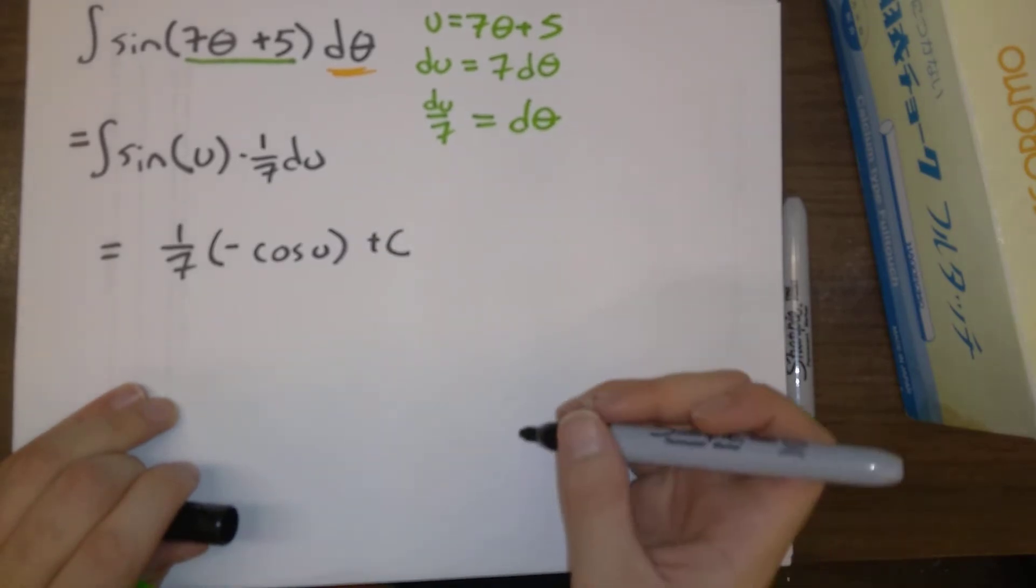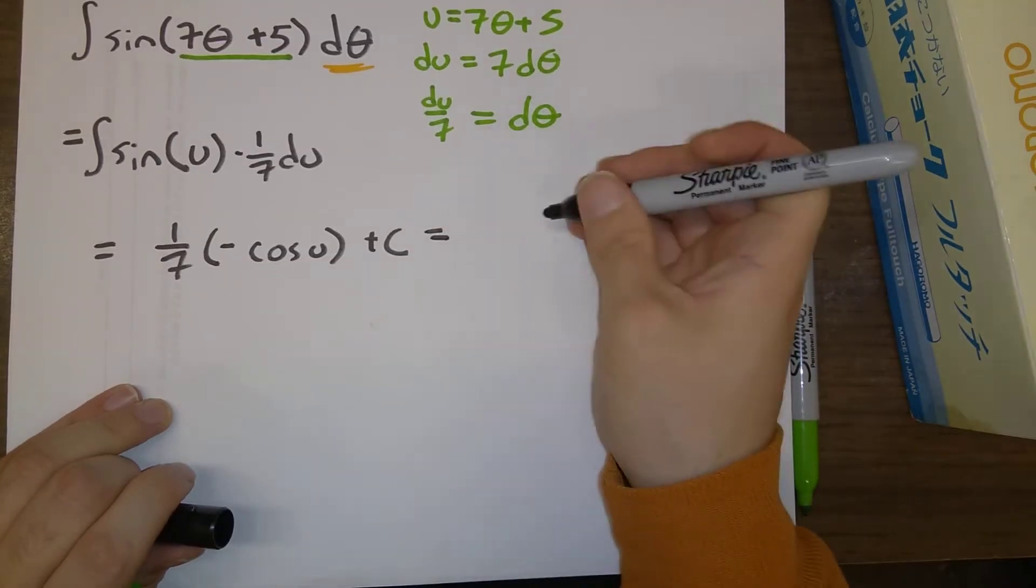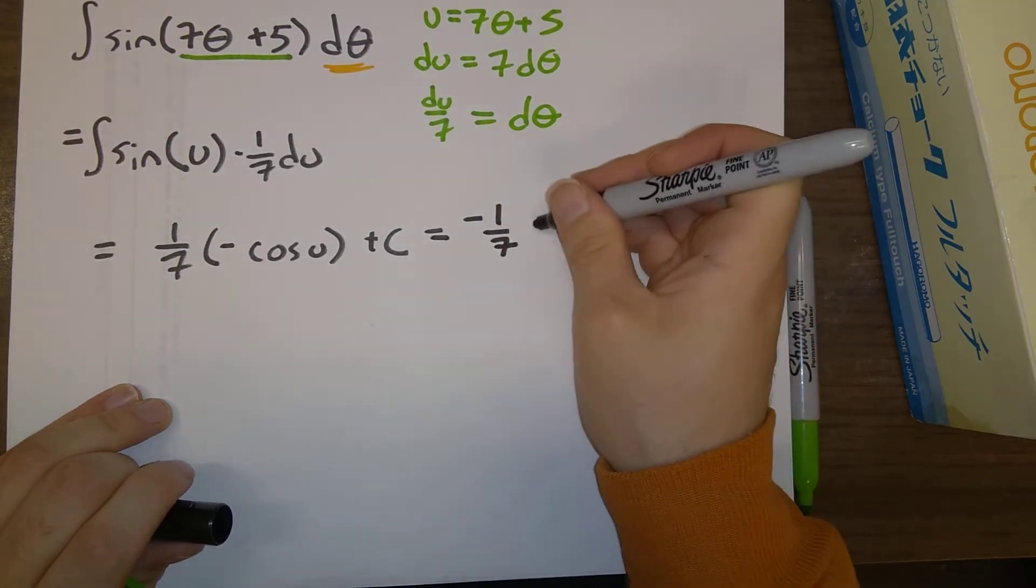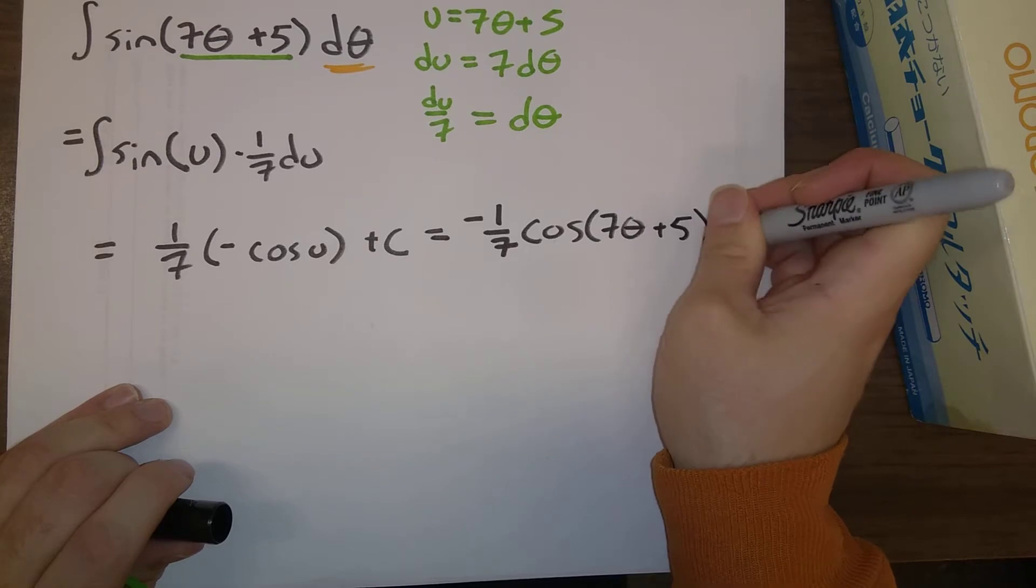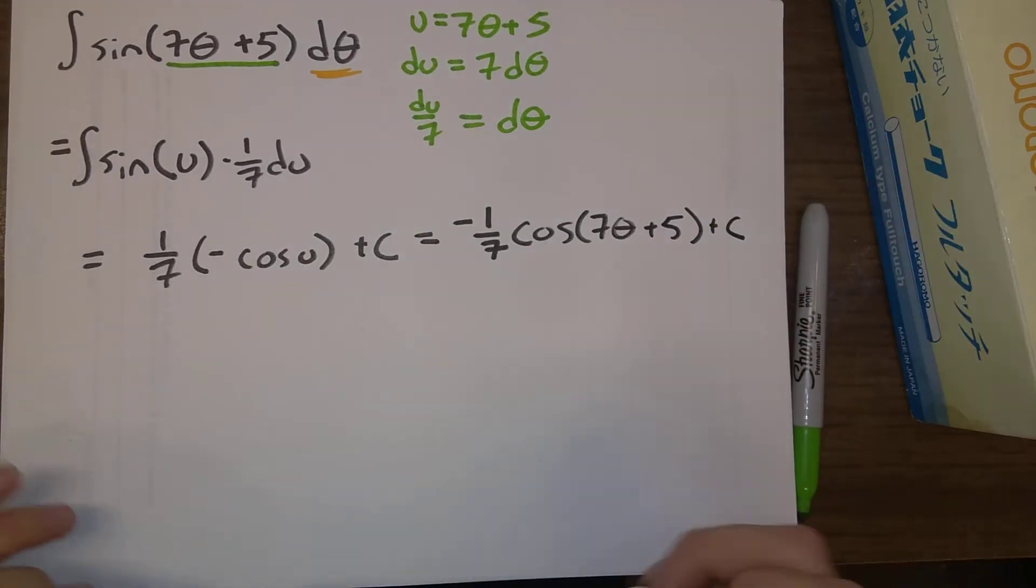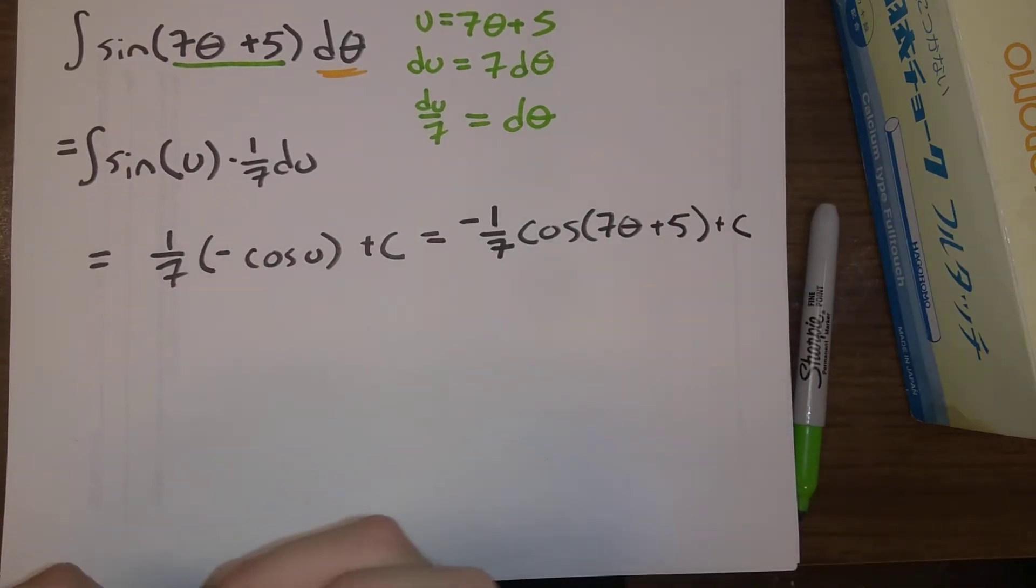And of course we have one last step, which is to replace u with the original variable. So u is 7 theta plus 5. So don't forget that little step at the end. So back when we originally did antiderivatives, I think we did problems of this sort, which we were kind of able to come up with just by looking at reverse engineering what's going on. This substitution gives a more systematic approach to doing it.